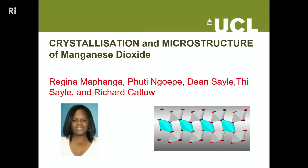What Bragg was showing there is that we get defects in what we call microstructure. I want now to move to how we can understand this using contemporary computer modelling. I'll highlight work done by Regina Mapanga and Puti Nwepi at the University of Limpopo in South Africa, with whom I've had a collaboration for well over 30 years — they run a very effective materials modelling group in the north-east of South Africa.